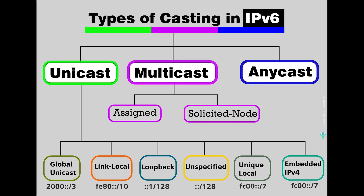Assigned multicast addresses are reserved multicast addresses for predefined groups of devices. An assigned multicast address is a single address used to reach a group of devices running a common protocol or service. Assigned multicast addresses are used in context with specific protocols such as DHCPv6.